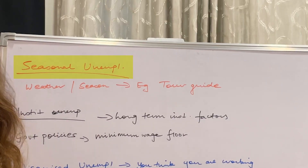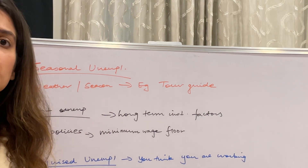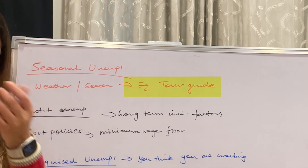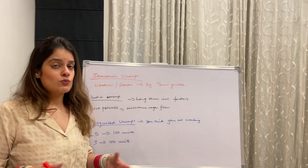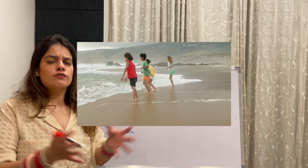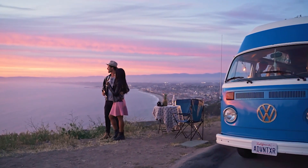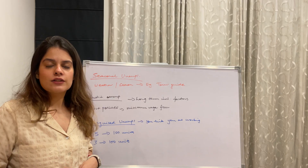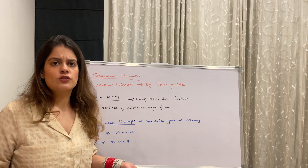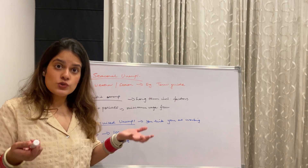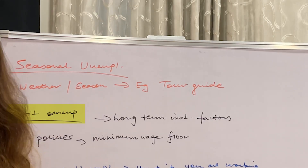Next is seasonal unemployment, which depends on the season and weather changes. For example, tourist guides are in high demand during summer months when vacations and holidays bring a large influx of tourists to a place — tourism is at its peak and they get plenty of work. But during the off-season, in extreme cold conditions, no one visits, so they tend to lose their jobs. This is seasonal unemployment.